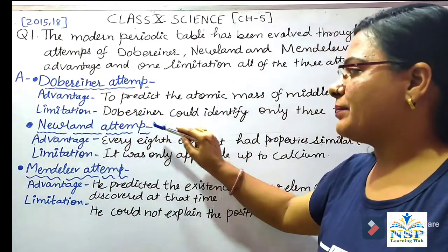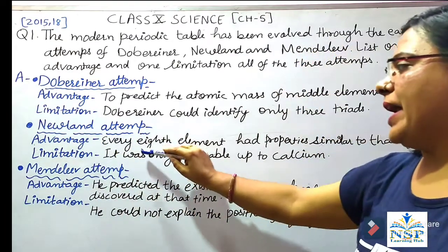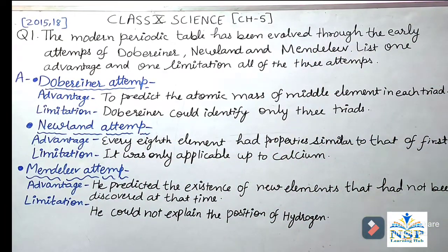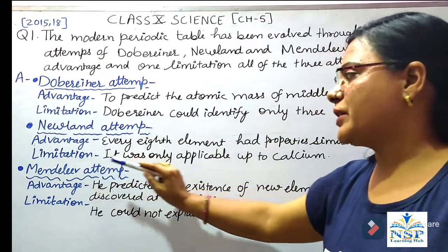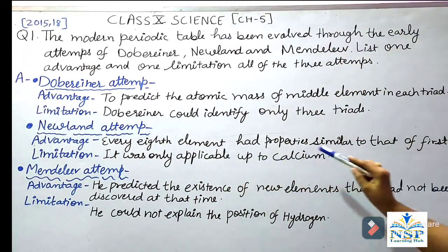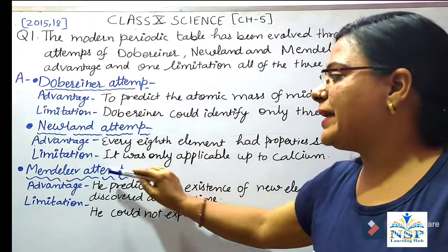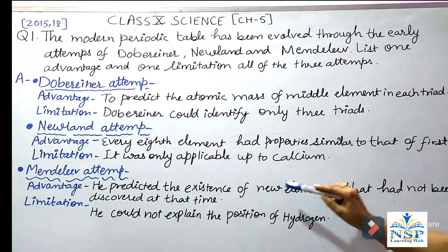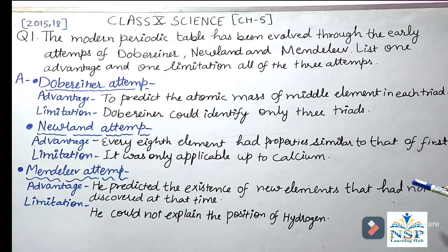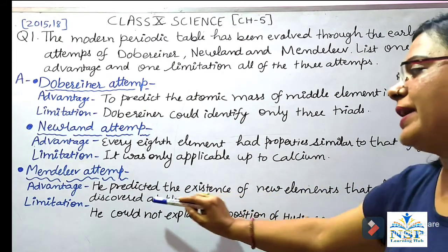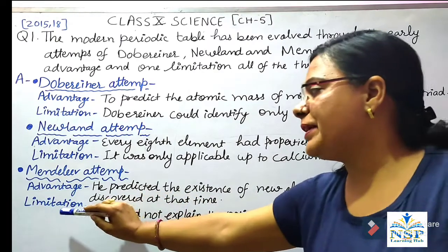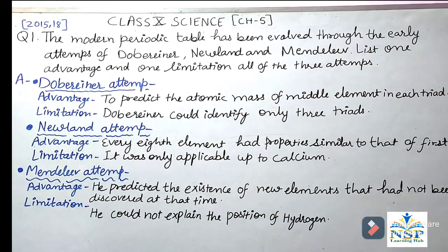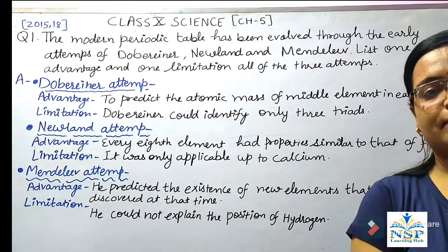Newland's attempt — Advantage: every eighth element had properties similar to that of the first. Limitation: it was only applicable up to calcium. Mendeleev's attempt — Advantage: he predicted the existence of new elements that had not been discovered at that time. Limitation: he could not explain the position of hydrogen in the periodic table.